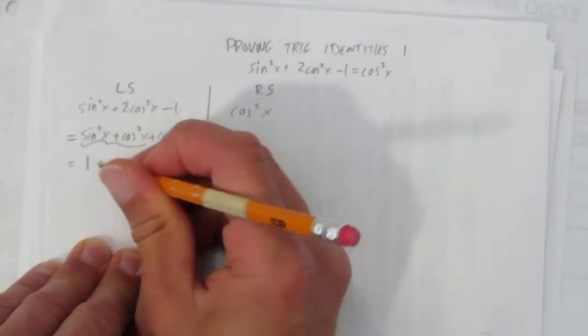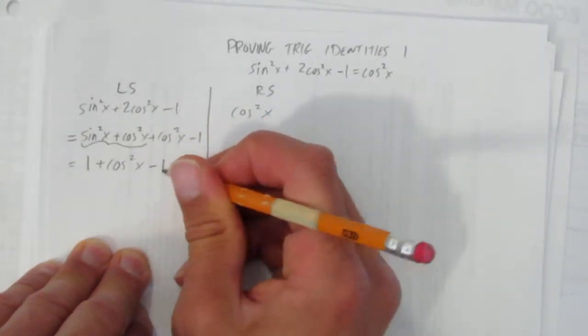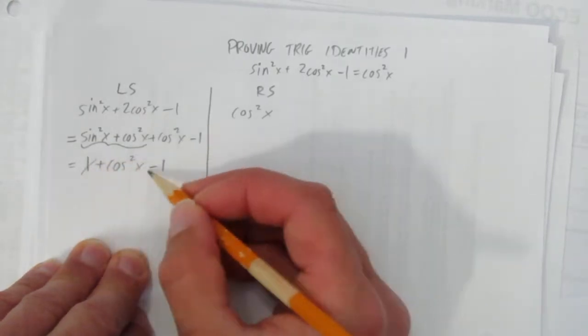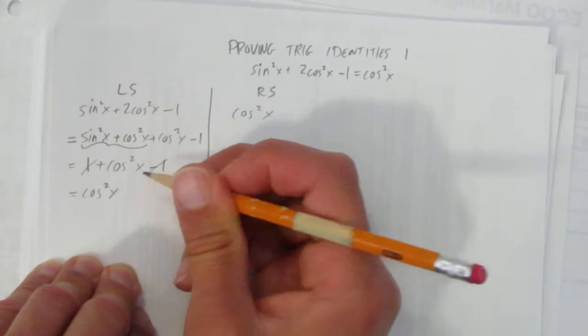You get 1 plus cos²x minus 1. And that's beautiful, because what's 1 take away 1? Nothing. They cancel out. And you're just left with cos²x. And we've proven it.